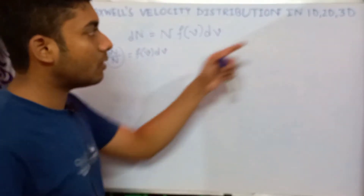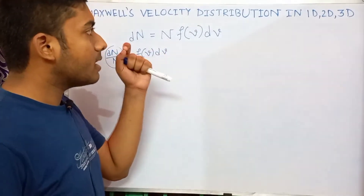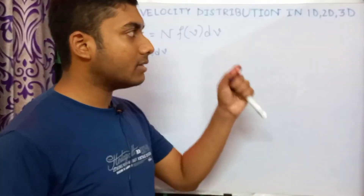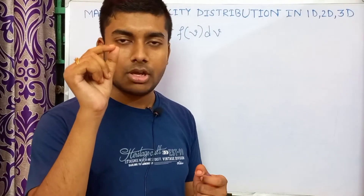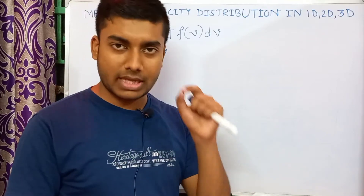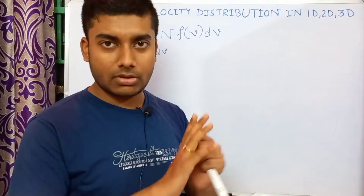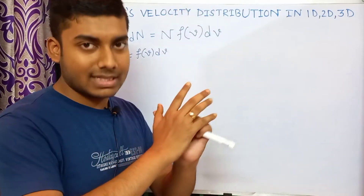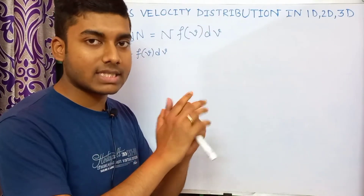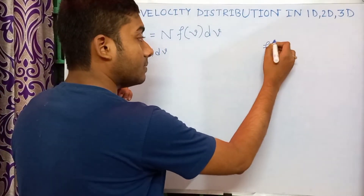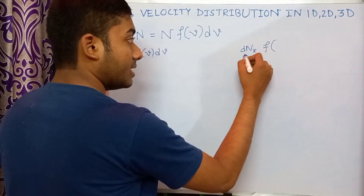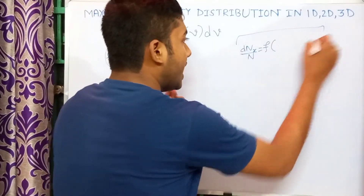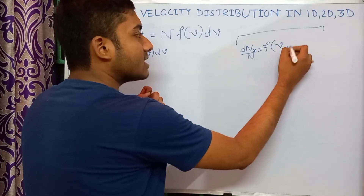Now let's start with the three-dimensional case. In 3D, a gas molecule has three components of velocity: vx, vy, and vz. The probability of finding a particle in the range vx to vx+dvx — considering only the x-component — is denoted as dnx/N, which equals f(vx)·dvx.